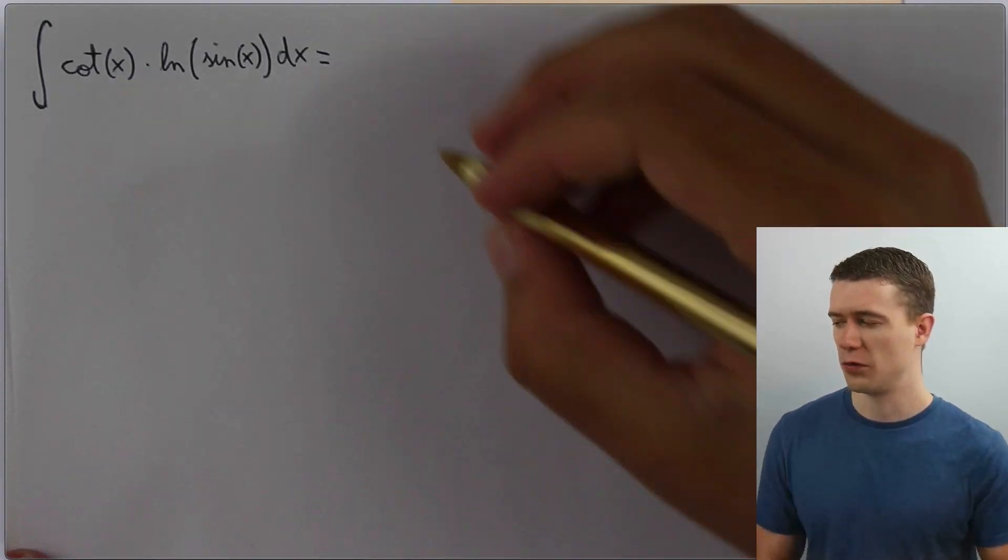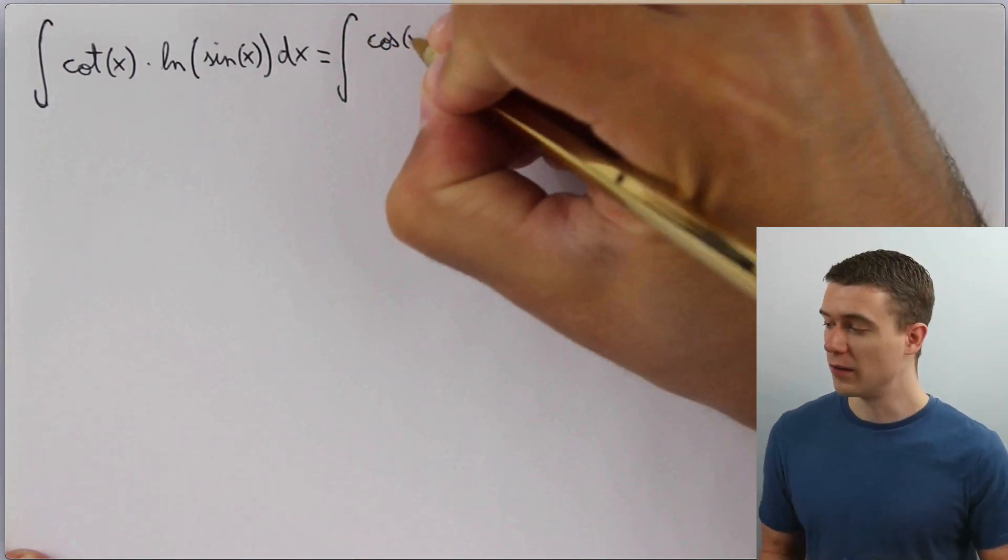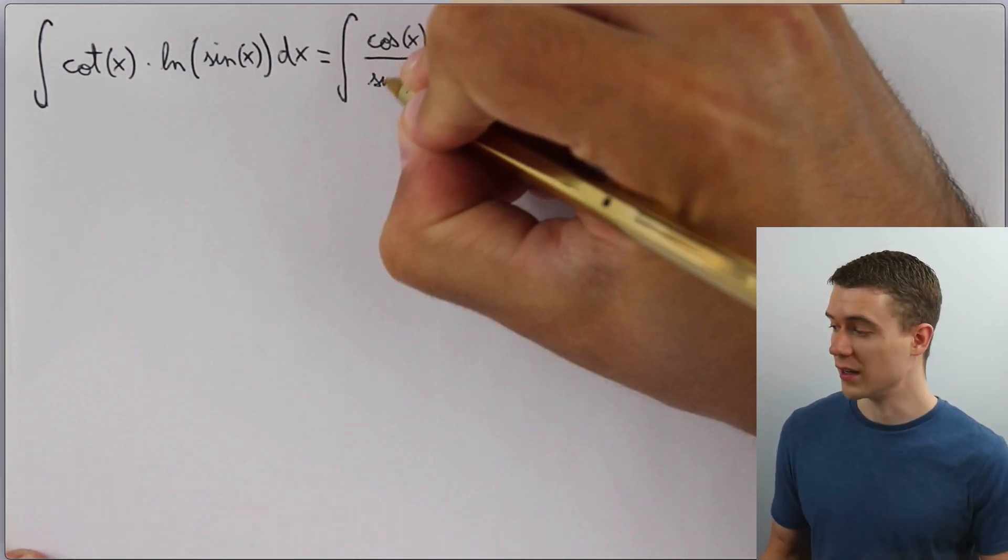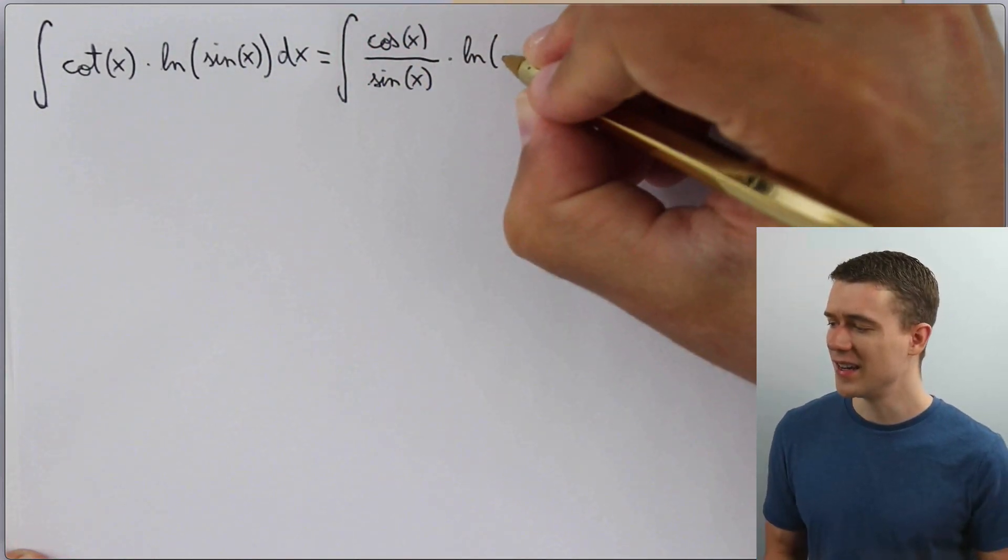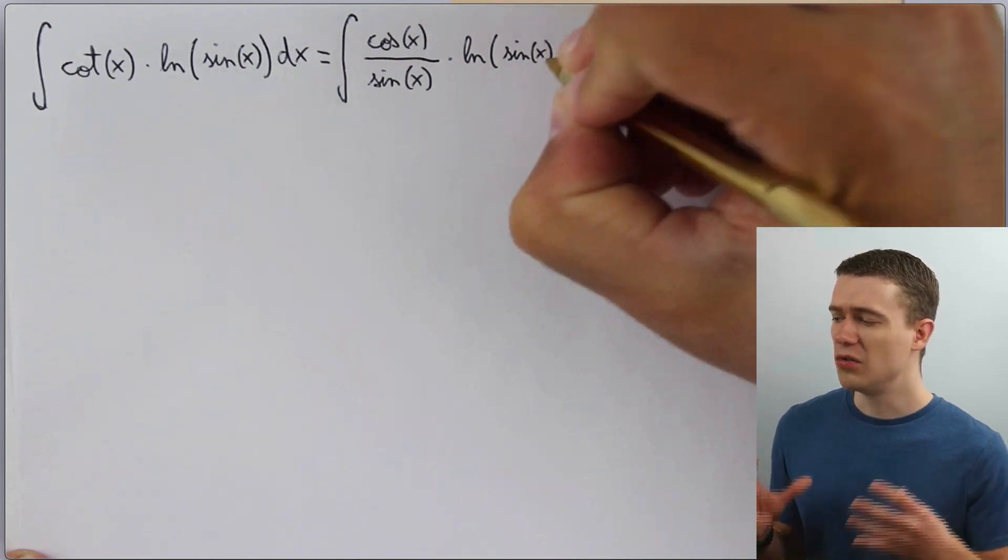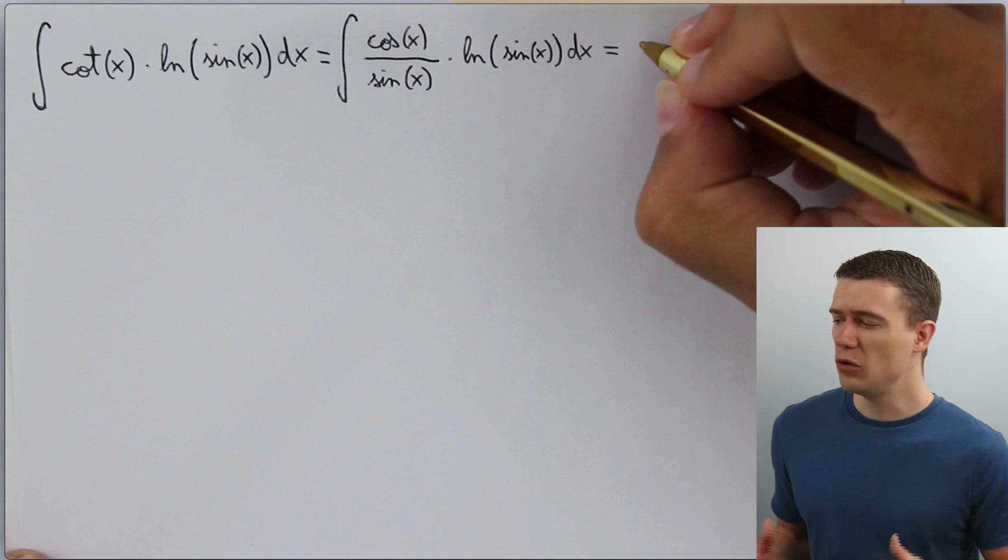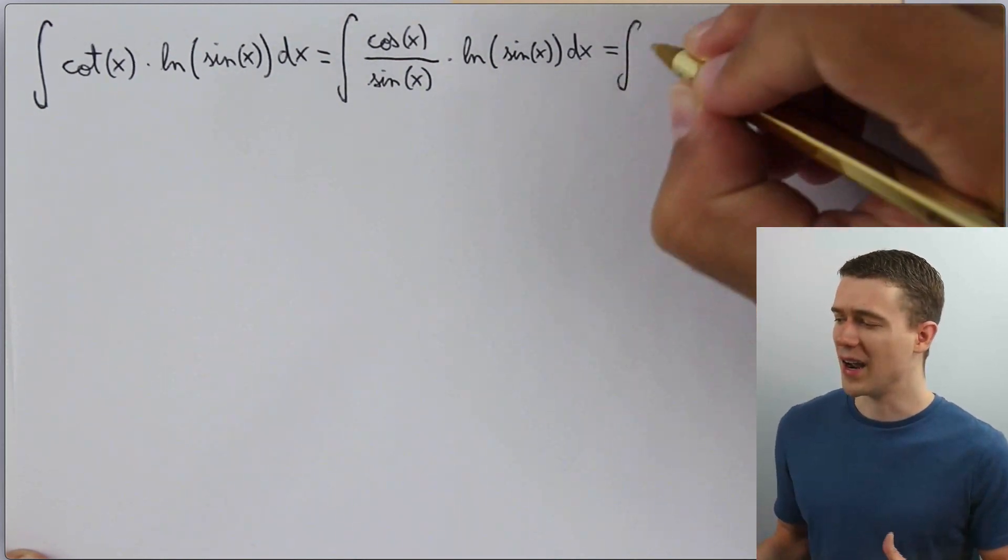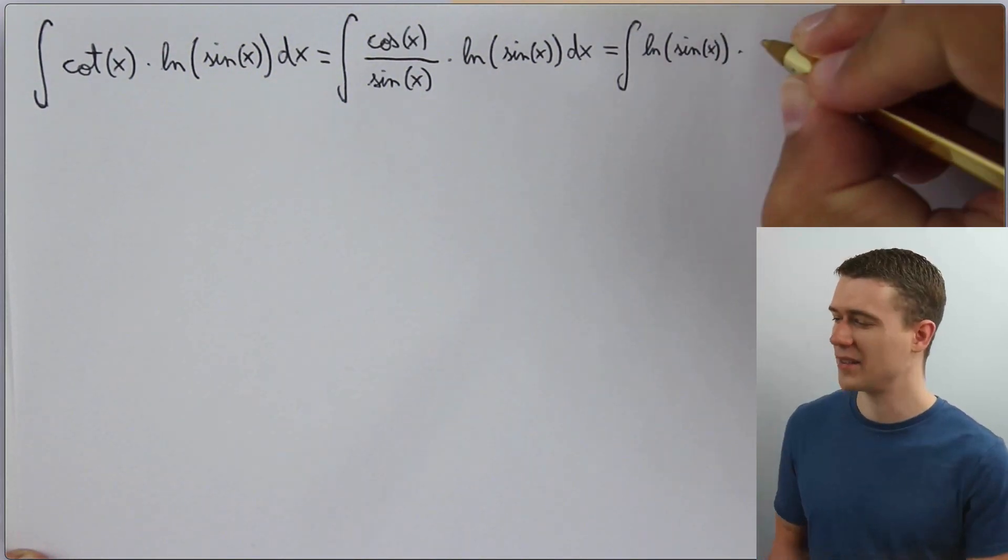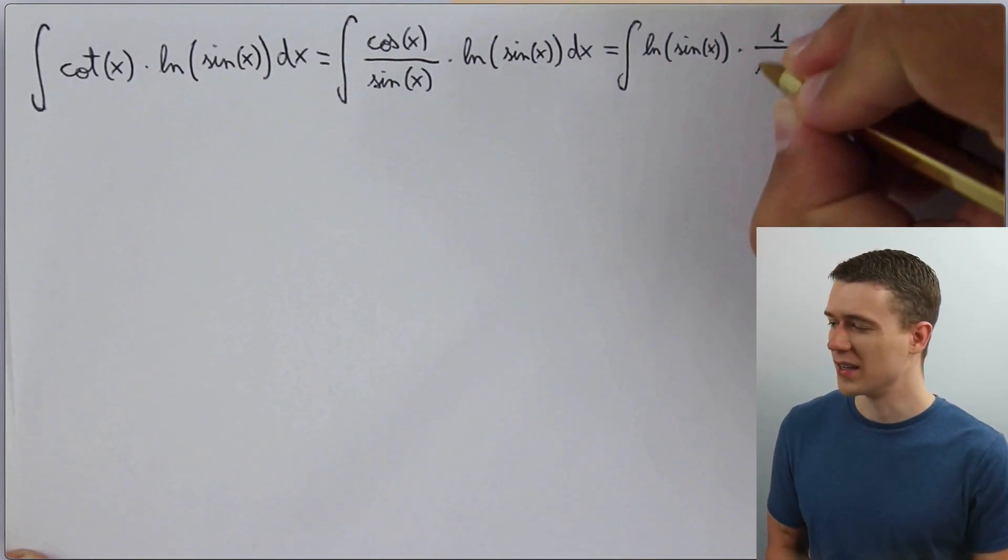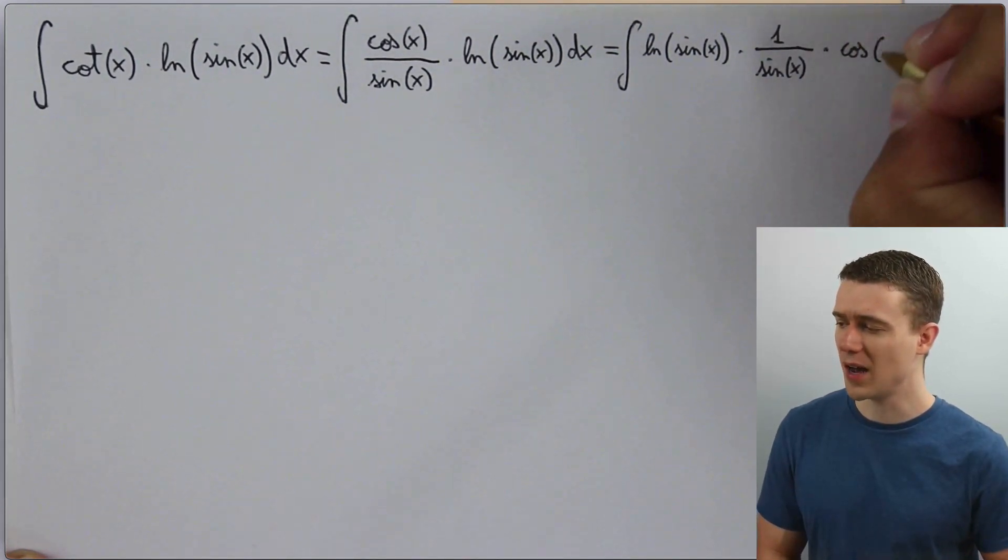One helpful thing that often helps is rewriting trig functions in terms of sine and cosine. So cotangent, we can just rewrite that as cosine over sine x dx. When you're going to integrate with the natural log, you almost never can have something inside the log function. You almost know that that's going to have to be some sort of substitution. So if you write it expanded, if you write it out...